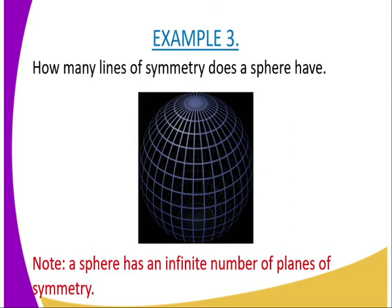Then you can see that there are so many lines of symmetry. They are reflected by drawing the lines which normally cut the sphere into two equal halves, and they appear as if they are like longitudes. And therefore, we can conclude and say a sphere has an infinite number of planes of symmetry.